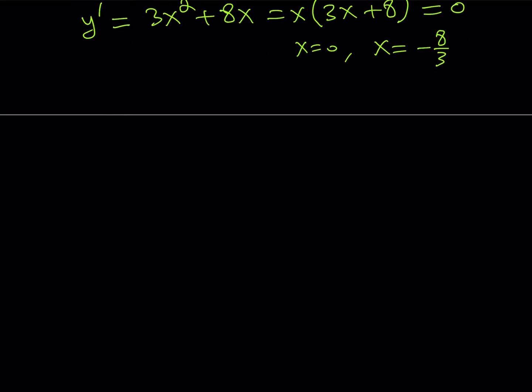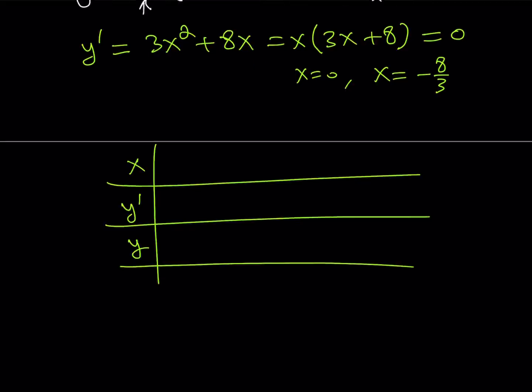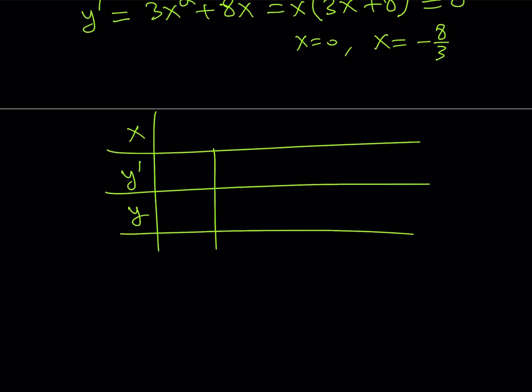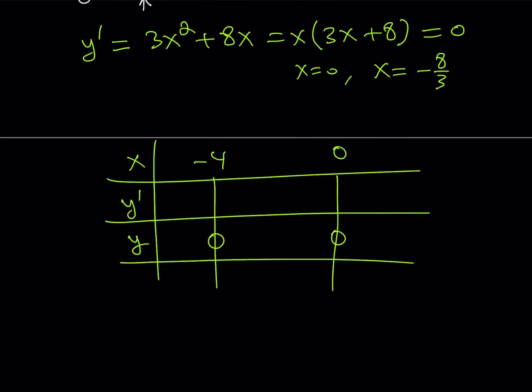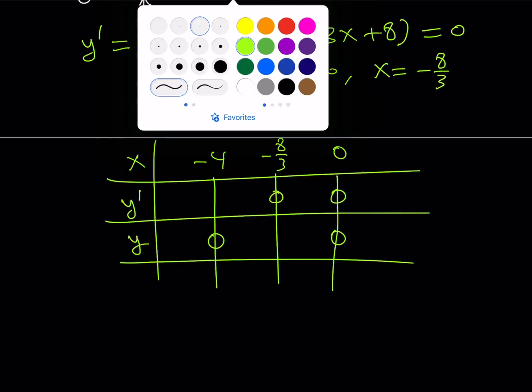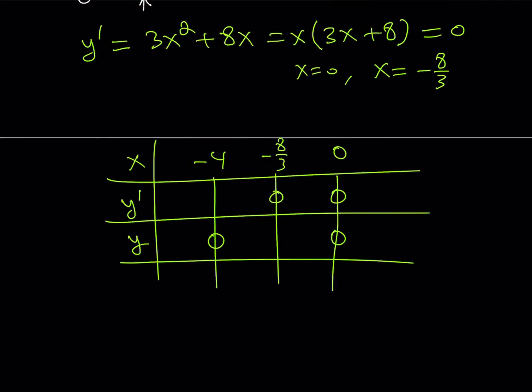Those are my critical points. So, I'm going to make a table like before we've done this. This is going to be x, this is going to be y prime, and this is going to be the y value. So, we know that y is 0 at negative 4 and 0. y is going to be 0 like this. And then at negative 8 thirds, something like this. Negative 8 third is obviously closer to 0. And 0, our derivative is going to be positive. So, let's go ahead and now take a look at how the sign changes here.